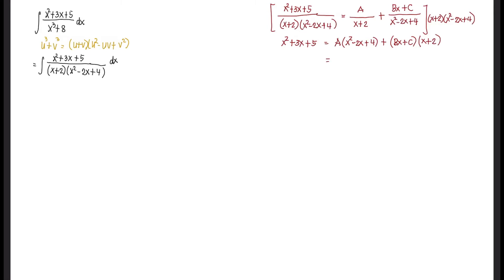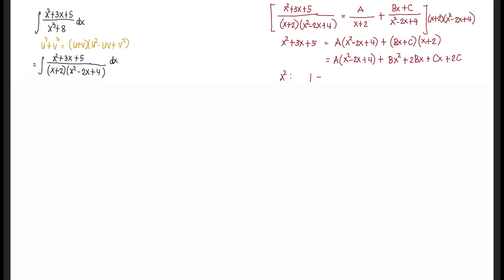We distribute. That gives A times x squared minus 2x plus 4, plus Bx squared plus 2Bx plus Cx plus 2C. Then we equate the coefficients of each term. For x squared: the coefficient on the left is 1, and on the right we have A plus B. For x: on the left we have 3, and on the right we have negative 2A plus 2B plus C.